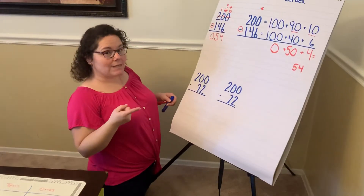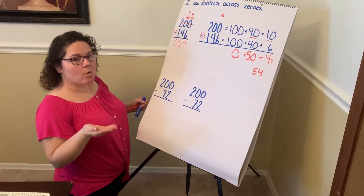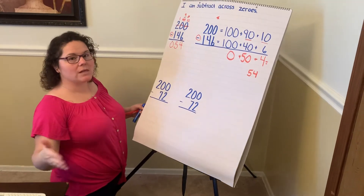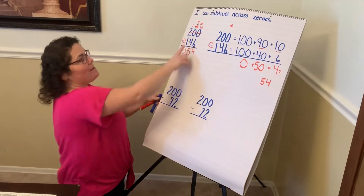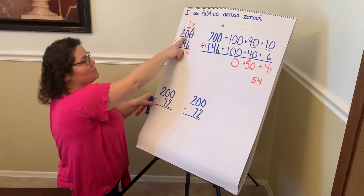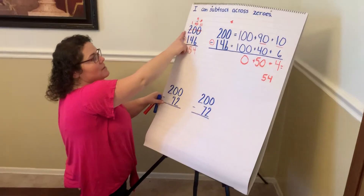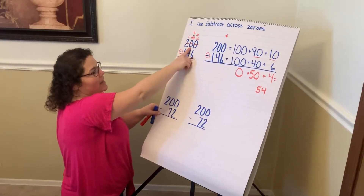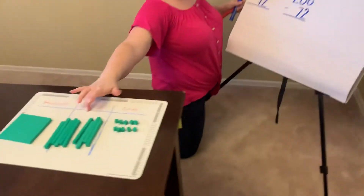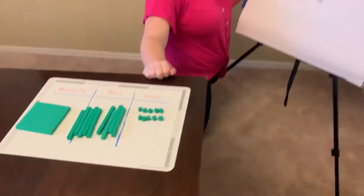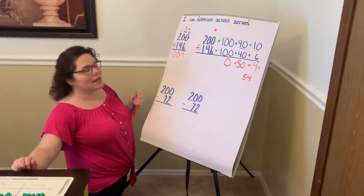Remember: more on top, no need to stop. When you have more on the floor, you have to go next door to the next place value to borrow. But if that neighbor doesn't have any — Mr. Tens doesn't have it — Mr. Tens has to go to Mr. Hundreds. Mr. Hundreds then loans that to Mr. Tens. Mr. Tens breaks it apart or ungroups it, and then he loans it to Miss Ones. So that's where we get the 1, the 9, and the 10 from.